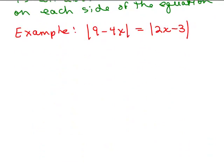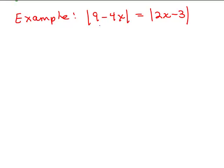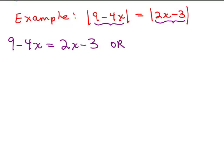Going back to the example: inside the first absolute value we have 9 minus 4x, and inside the second, 2x minus 3. Either those expressions are equal to each other — 9 minus 4x equals 2x minus 3 — or I put a minus sign in front of one of them. Remember to use your distributive property and think of what's inside as in parentheses. I'm only using this approach when there's just an absolute value on both sides, not like an absolute value plus some other number.